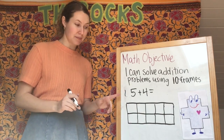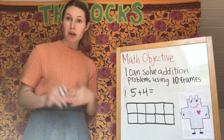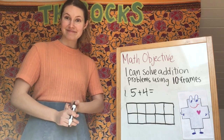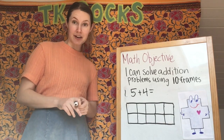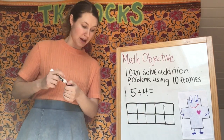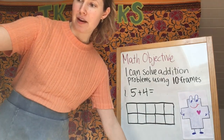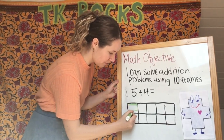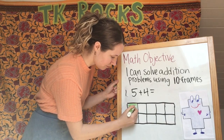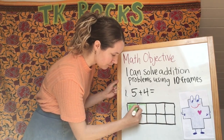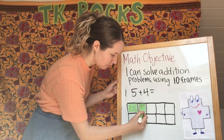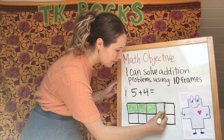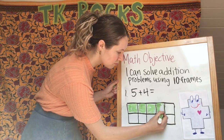So let's say you have this problem. It says five plus four equals. What's the first thing that I need to do? I need to start with my five here and I need to color in five frames. So I'm going to do that now — I'm going to grab a green marker. One, two, three, four, five.